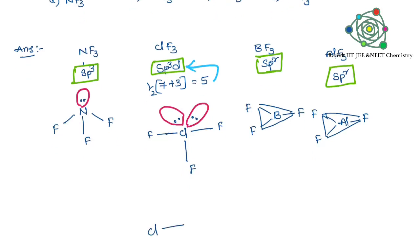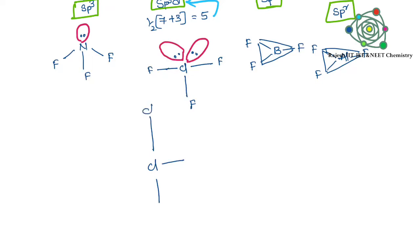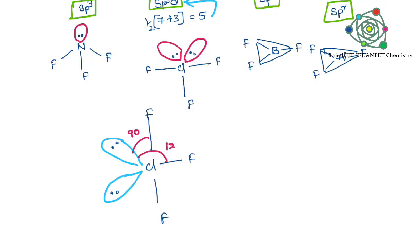The lone pair in NF3 is not affecting bond lengths, but in ClF3 the lone pairs do affect bond lengths. In ClF3, two equatorial positions are occupied by two lone pairs, giving it a trigonal bipyramidal base structure.